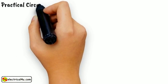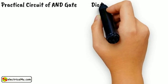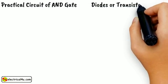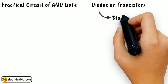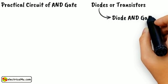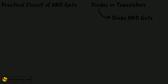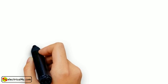Now let us show the practical circuit of AND gate. Normally an AND gate is designed by either diodes or transistors. When diodes are used to design AND gate, it is called diode AND gate. The basic circuit of a diode AND gate is shown here.